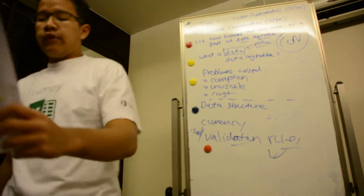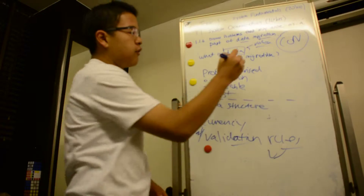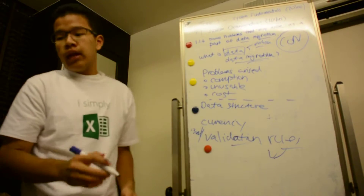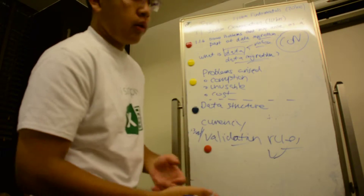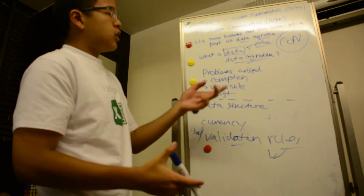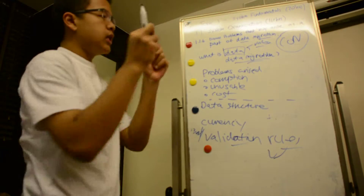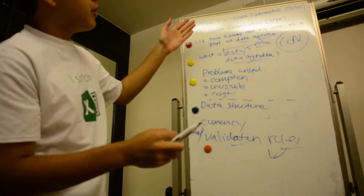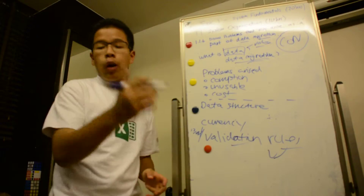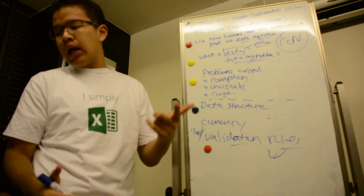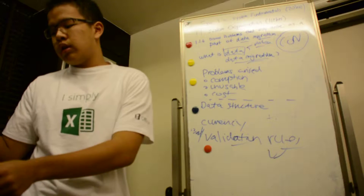So if that is the definition of data, what is the definition of data migration? Migration, as most people have heard, is an economics or geography term meaning moving from one place to another. But in computer science terms, data migration is copying, converting, or moving data from one system to another.